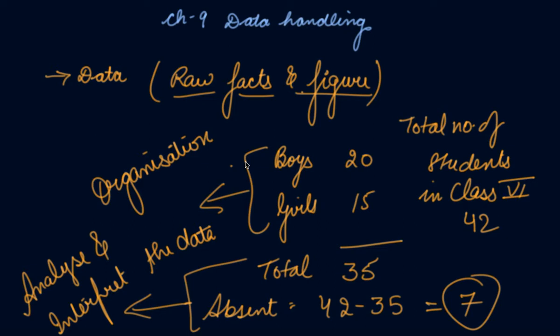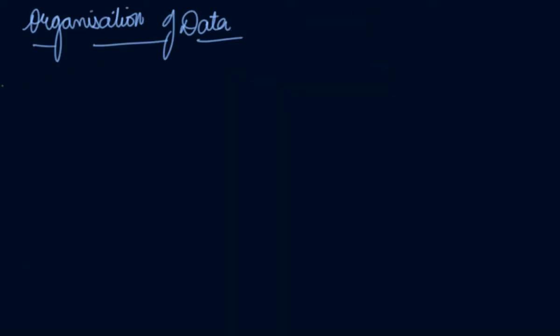So why do we need data? See, every now and then we need something or the other to be found out. Like your mother says, see how many number of fruits are lying in the refrigerator, go and search how many bottles are there in the refrigerator. So all these things are actually the data. We require every time the data, and once we organize the data, after that we draw the results out of that data.